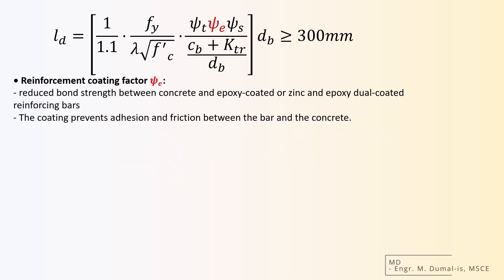Next, the reinforcement coating factor ψe, is the factor that accounts for the reduced bond strength between concrete and epoxy coated or zinc and epoxy dual coated reinforcing bars. The coating prevents adhesion and friction between the bar and the concrete. In cases where the rebar is coated and the cover to the coated bars is small, where clear cover is less than 3 times the bar diameter, or where the clear spacing between the bars is less than 6 times the bar diameter,